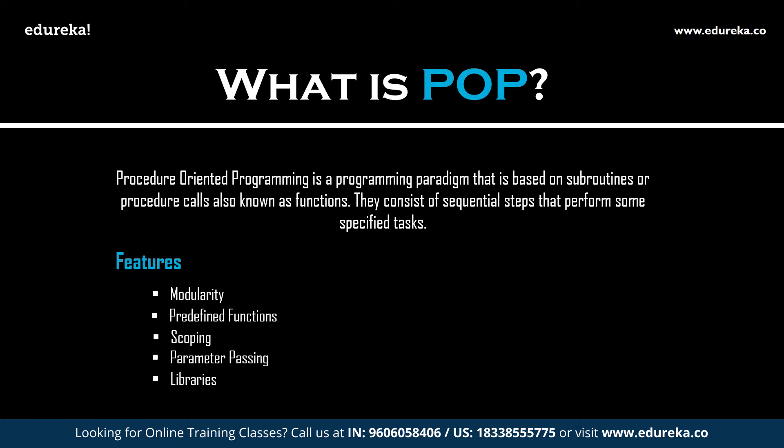Libraries are nothing but collections of predefined functions, classes, codes, etc. that can be used within any program. Some of the libraries present in C language are the standard input-output library, the string library, etc. In procedural programming, source code is portable — code written once can be used on different systems. You can write any type of programs using procedural languages, therefore it is very good for general purpose programming. Procedural programming also reduces code redundancy through functions. A function written once can be used anywhere throughout the program, and a reduced code also leads to reduction in memory usage.